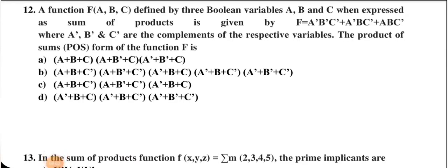Next question: a function F defined by 3 Boolean variables A, B, and C, expressed as sum of products, is given. A-bar, B-bar, C-bar are complements of respective variables. We are asked for the product of sum (POS) form. Whatever terms are absent in the SOP form will be the POS terms.